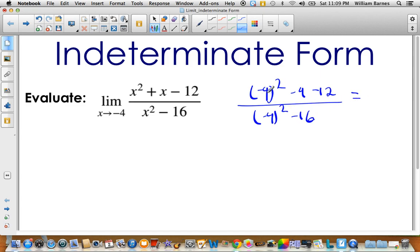So on top, negative 4 squared, 16, minus 4, minus 12, 0. And then the same thing for the bottom, negative 4 squared minus 16, so that's going to be 0 as well. So I end up with a 0 over a 0.